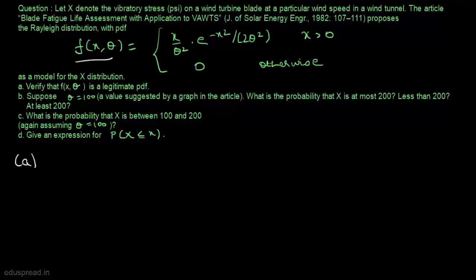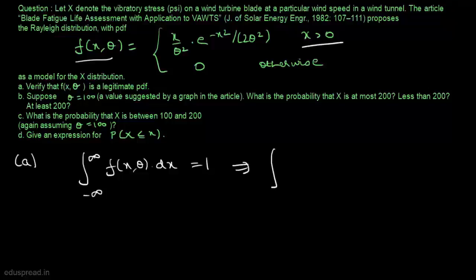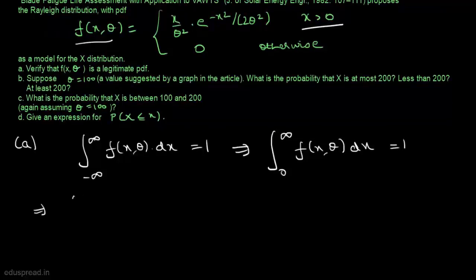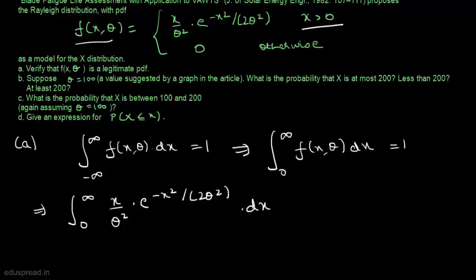To verify that this PDF is legitimate, we have to show that the integral of f(x, θ) dx from minus infinity to infinity equals 1. Since x is greater than 0, this means we have to show that the integral of x divided by θ² multiplied by e raised to the power minus x² divided by 2θ², dx from 0 to infinity, equals 1.